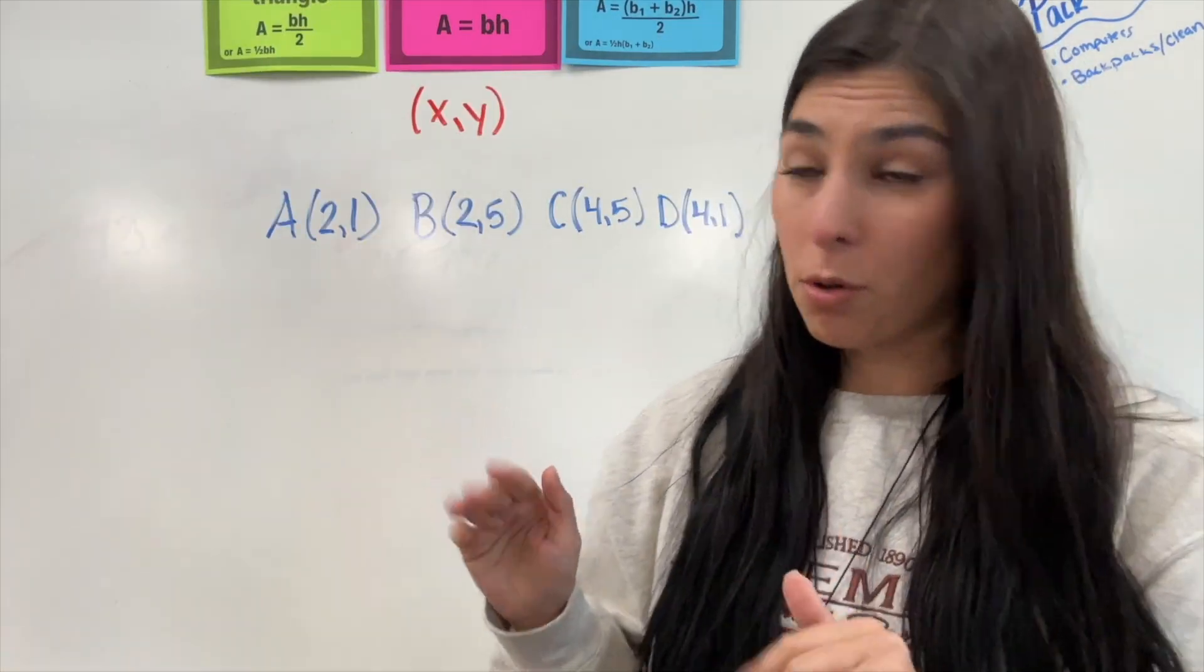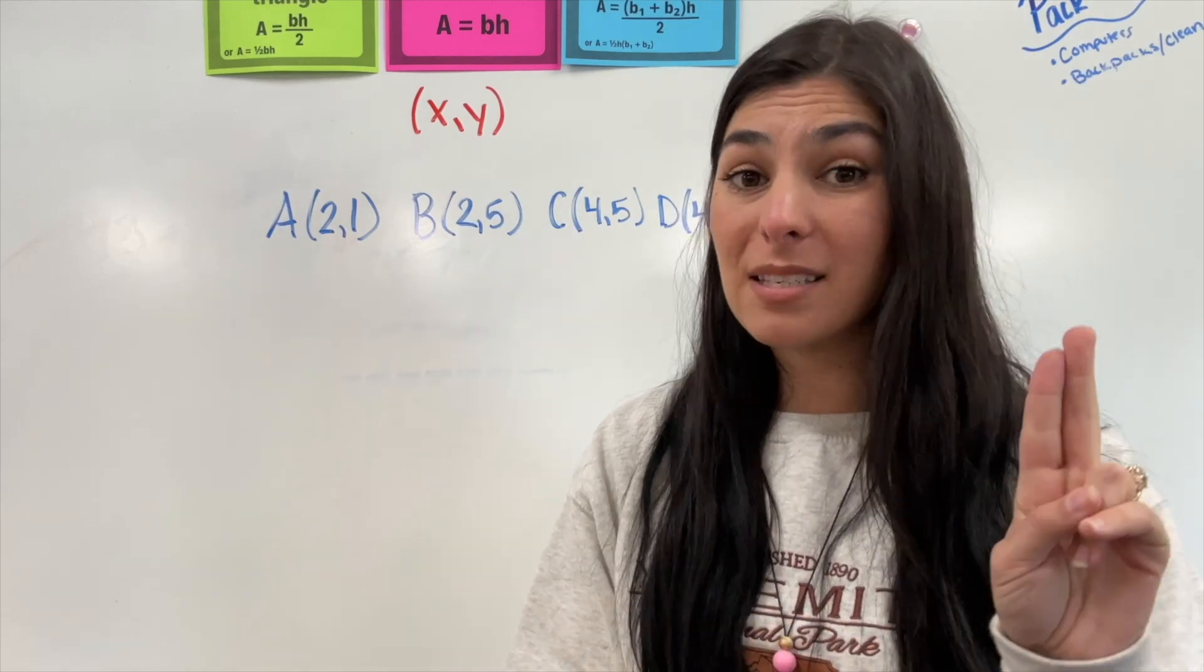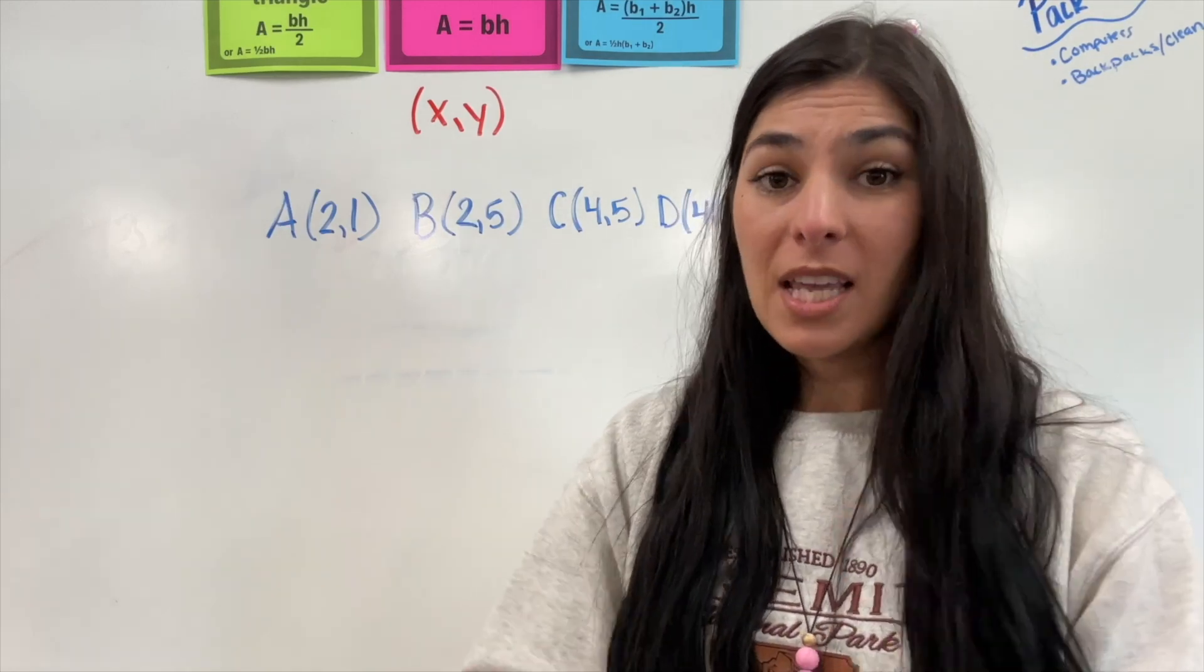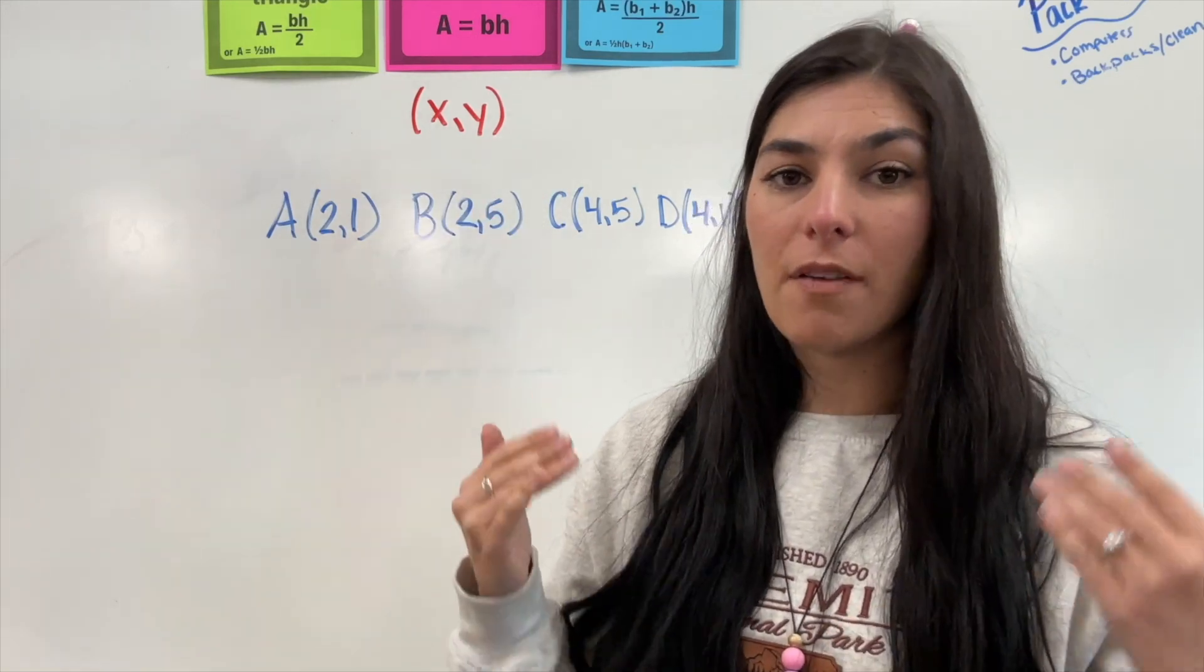So, from here, I have my coordinates. Now, the coordinates are always X and then Y. So, basically, you're going to find the X's that match. And if the X's match, you just subtract the Y's. And then you find the Y's that match, and then you just subtract the X's that are different. That's going to give you a difference of units.